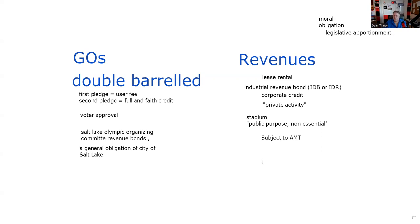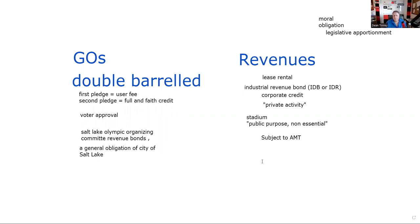So if the test question mentions a city is going to back something if it fails, we know it's double-barreled because the state legislature — a moral obligation — would require the state. That distinction works. All right.